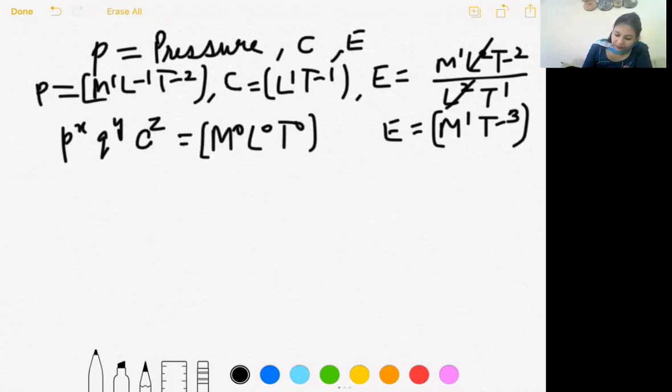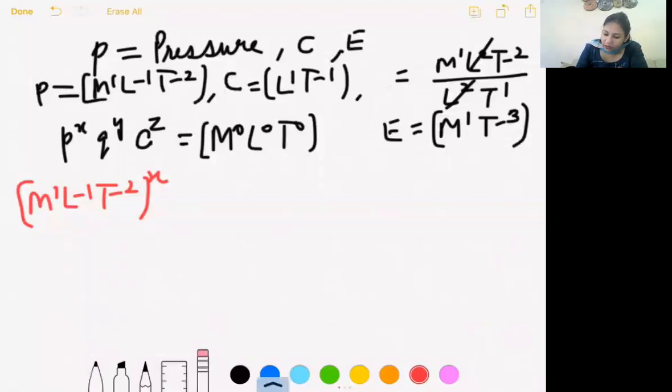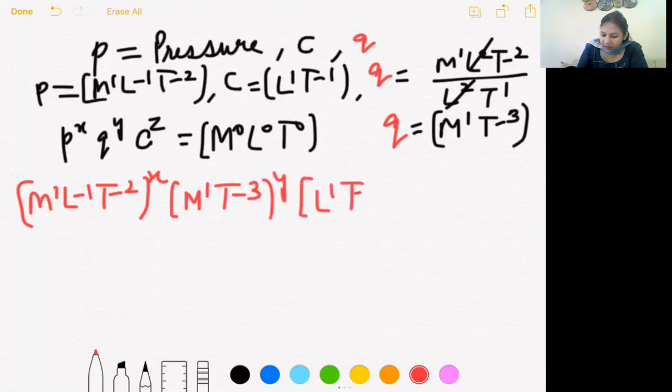P ki kya hai? M1 L minus 1 T minus 2 raise to par X. Q kya hai yahan phe? They have the symbols that are different. Q means that the E energy is called Q. This is Q. Let me change this in question. This is Q that we have removed. Right. So this dimension is M1 T-3 raised to power Y. And speed of light L1 T-1 raised to power Z.